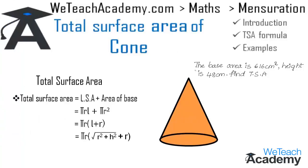Coming to the first example. The base area is 616 cm² and the height is 48 cm — find the total surface area. The base area equals π·r² = 616. Transferring π to the other side, r² = 616 × (7/22).